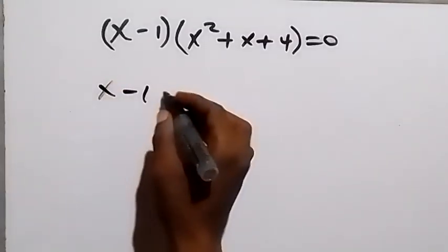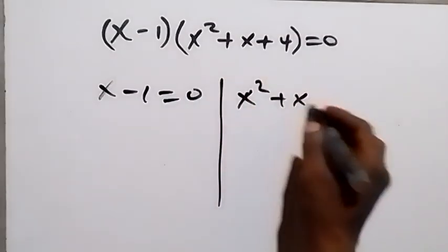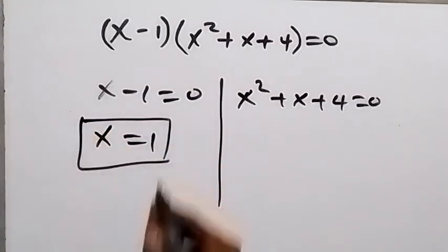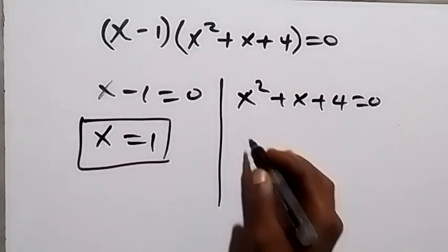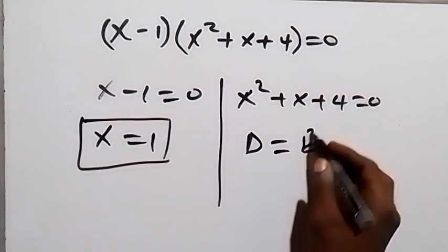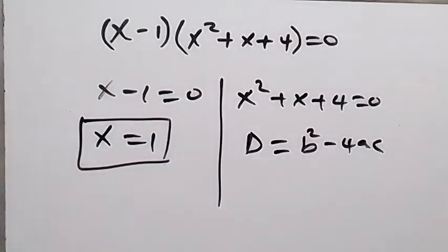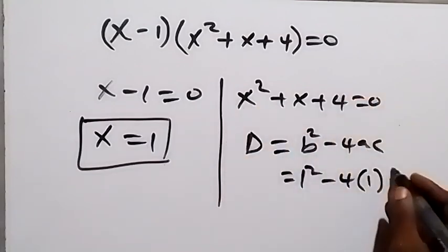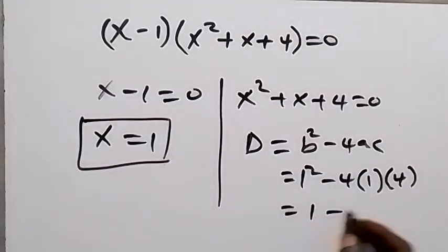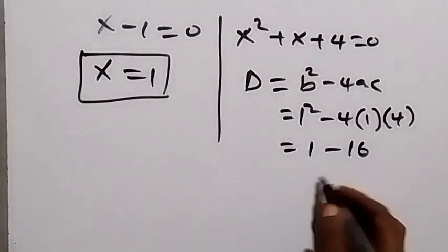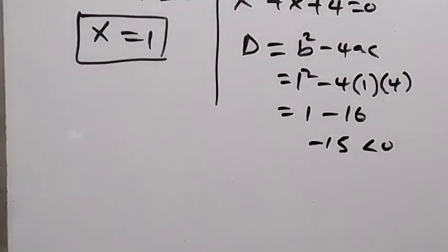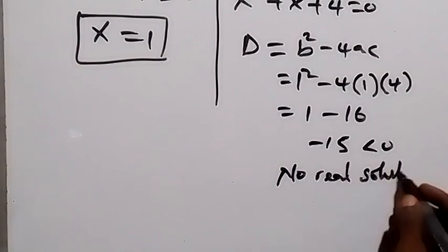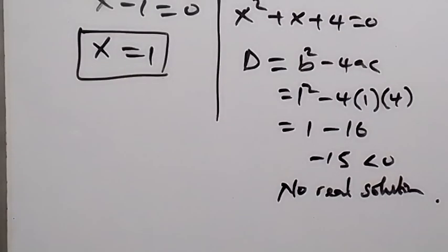We have two cases. First: x − 1 = 0, giving x = 1. Second: x² + x + 4 = 0 — checking the discriminant, b² − 4ac = 1² − 4(1)(4) = 1 − 16 = −15, which is less than zero. Since the discriminant is negative, there is no real solution from this case.